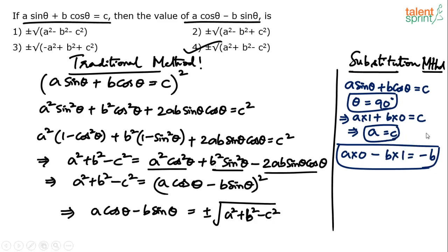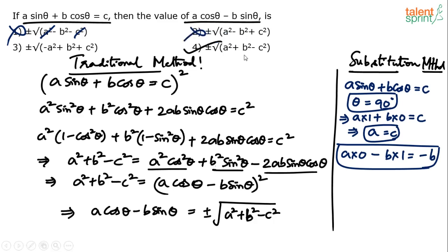Substituting a = c: in option 1, a² and -c² cancel, leaving ±√(-b²), which cannot be evaluated — eliminated. In option 2, substituting gives 2a² - b² under the root, which doesn't give -b — eliminated. In option 3, -a² + a² cancels, leaving ±√(b²) = ±b, so -b is possible. In option 4, a² - c² cancels, leaving ±√(b²) = ±b, also possible.